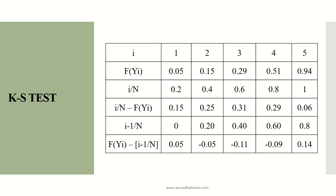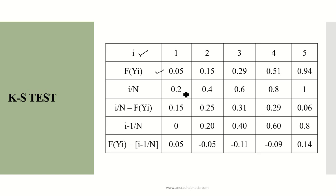We generate a table with i ranging from 1 to 5, representing the count of values. The data values F(Yi) are arranged from smallest to largest: 0.05, 0.15, 0.29, 0.51, and 0.94. We then calculate i/N for each row, where N equals 5: giving 0.2, 0.4, 0.6, 0.8, and 1.0.